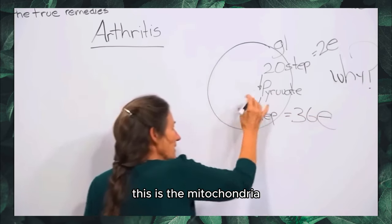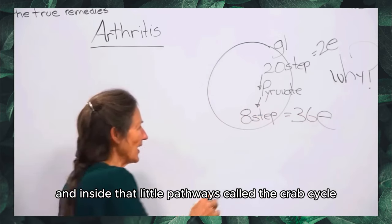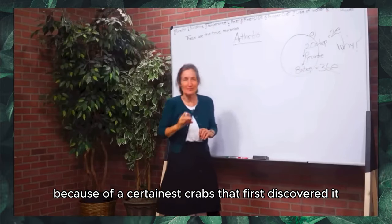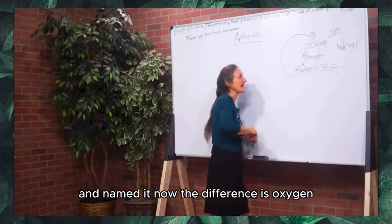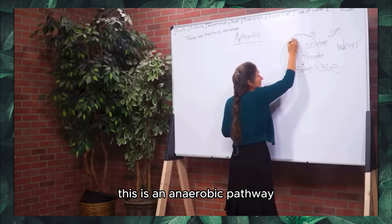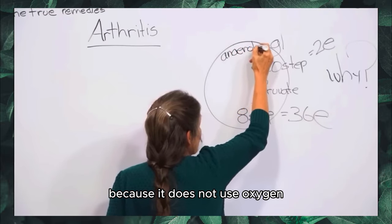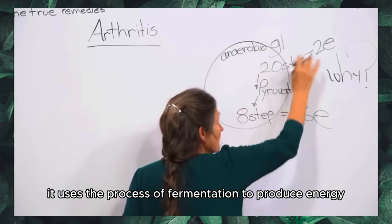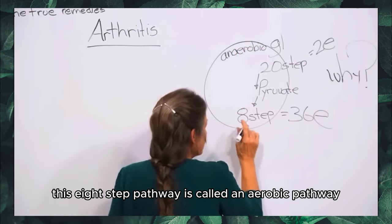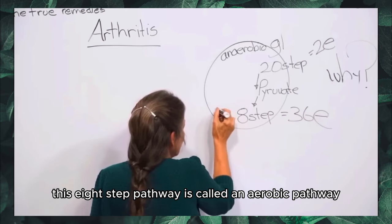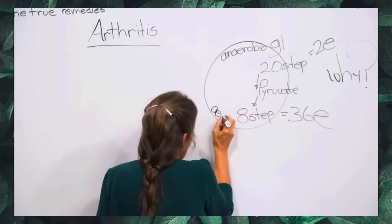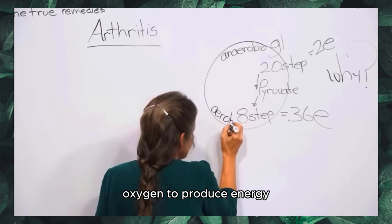This is the mitochondria, and inside those little pathways is called the Krebs cycle, named after Ernest Krebs who first discovered it. The difference is oxygen: the glycolytic pathway is anaerobic because it does not use oxygen — it uses fermentation to produce energy. The eight-step pathway is aerobic because it uses oxygen to produce energy.